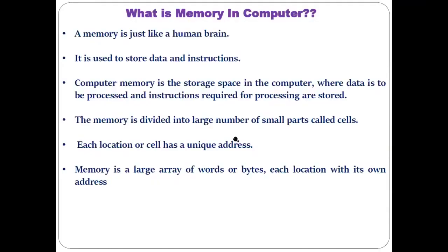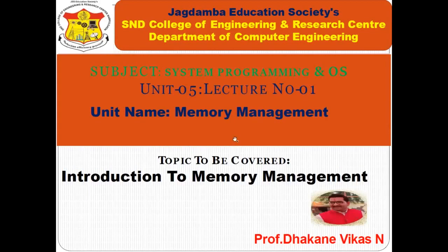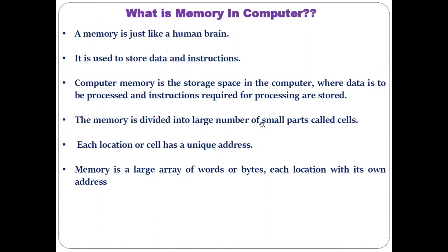In the previous lecture we discussed what exactly is the operating system. As you know, the operating system acts as an interface or communication bridge between the user and the computer hardware. It performs different roles like process management, resource allocation, and memory management. The operating system has to manage and allocate different hardware resources so that the computer system can work properly, and one key functionality is memory management.